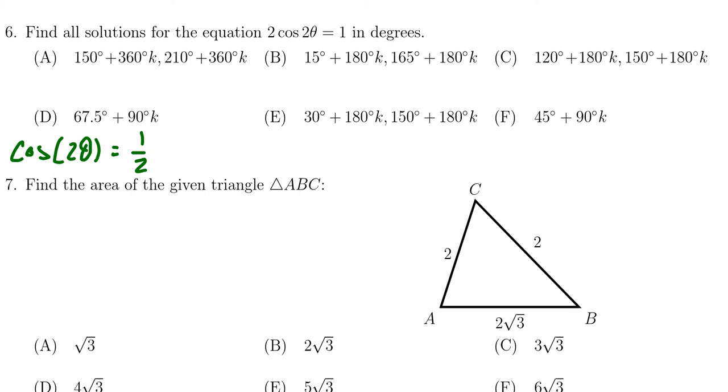Cosine is positive in the first and fourth quadrant. And so we get 2 theta is going to equal 60 degrees. That's when cosine is equal to 1 half in the first quadrant.